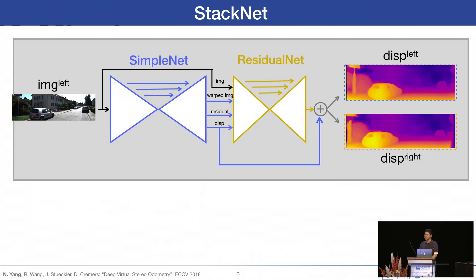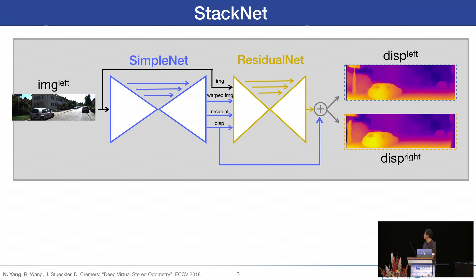For the network architecture, we propose StackNet, which is comprised of two sub-networks: SimpleNet and ResidualNet. Inspired by DispNet and FlowNet, both are fully convolutional neural networks with skip connections. ResidualNet learns the residual signal of SimpleNet, and it gets additional clues like the warped image, the residual image, and the disparity map from SimpleNet. The final outputs are the element-wise summation of the outputs from the two sub-networks.